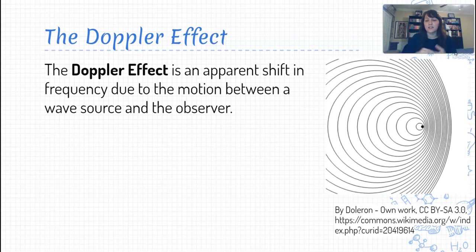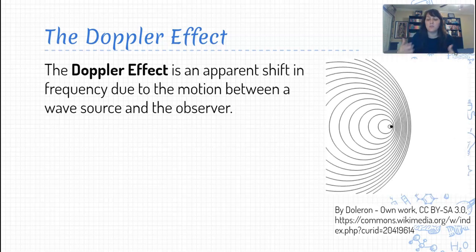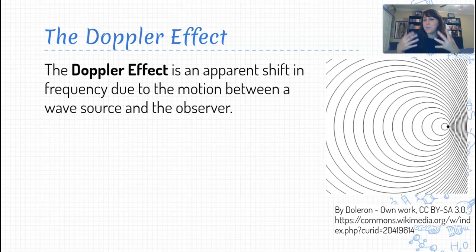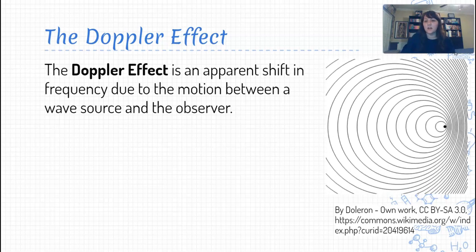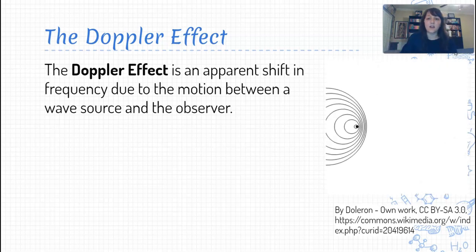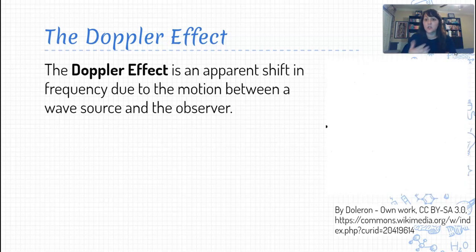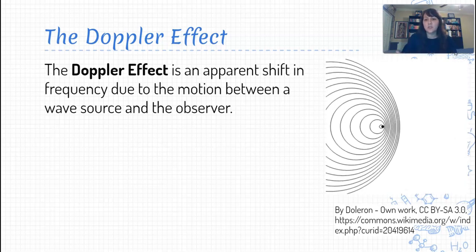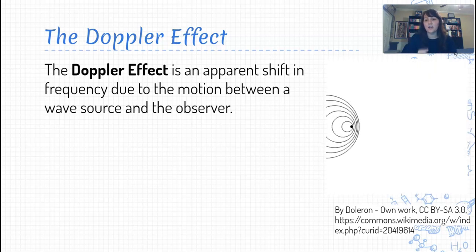Now, I say apparent because there's not an actual shift in the frequency of the waves being produced. It just appears that way. So, if we're continuing on with the example of the car horn as it's going there. So, the car represents then the object, the source object that is producing this sound.